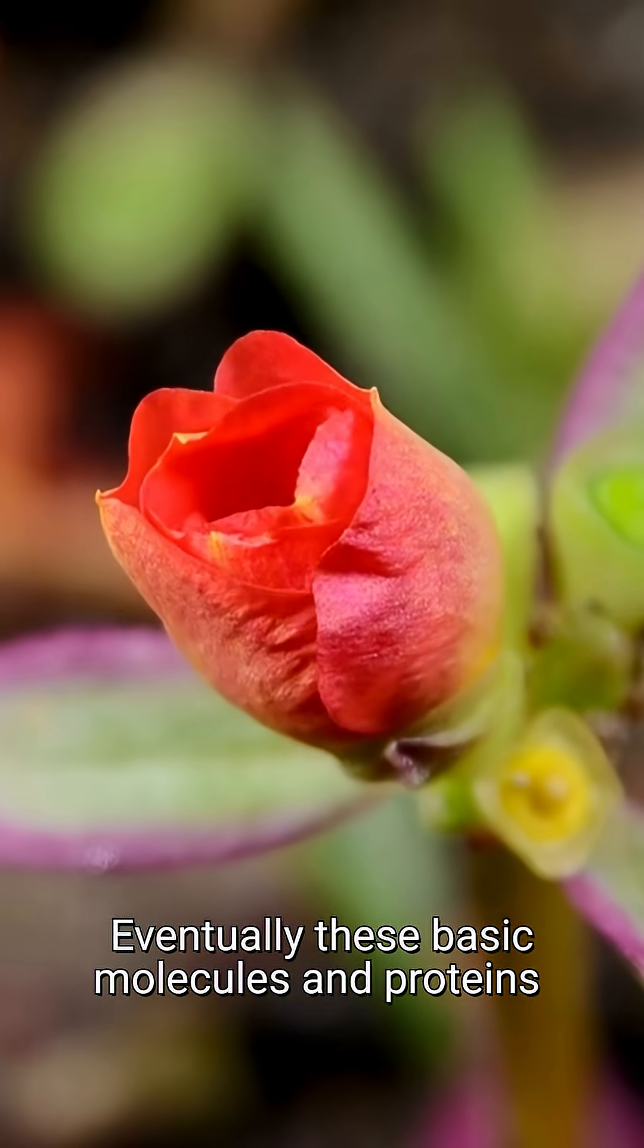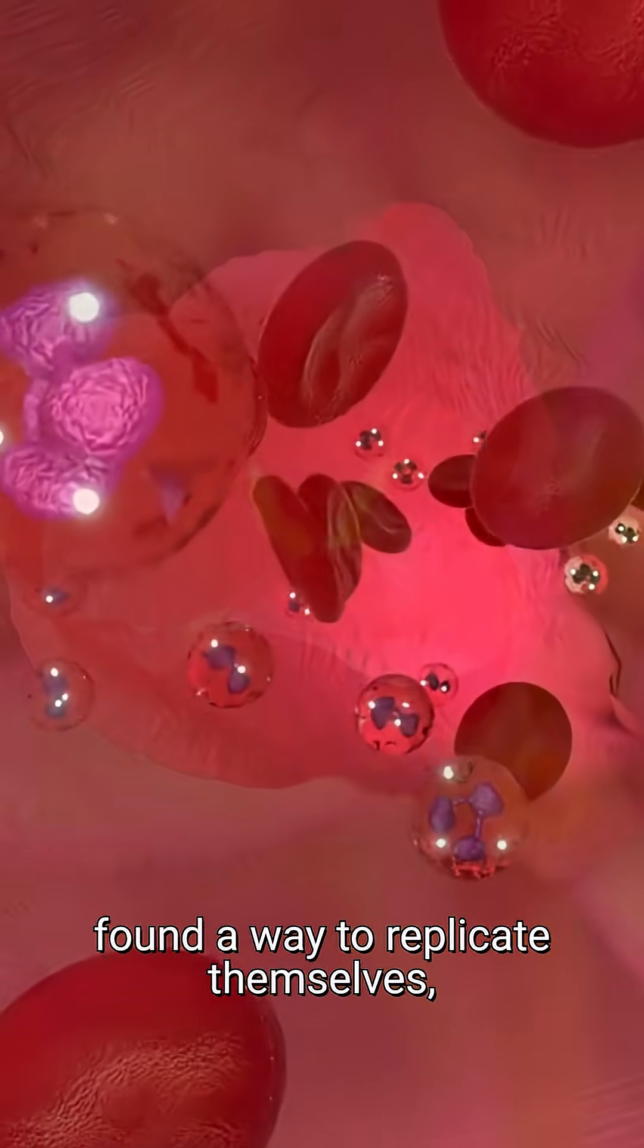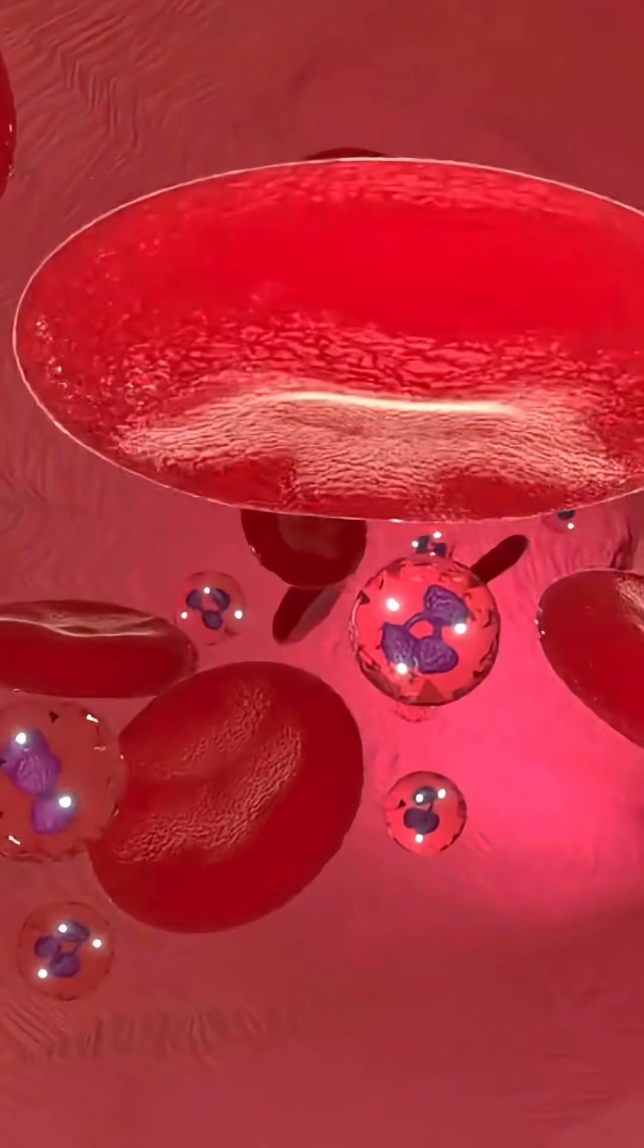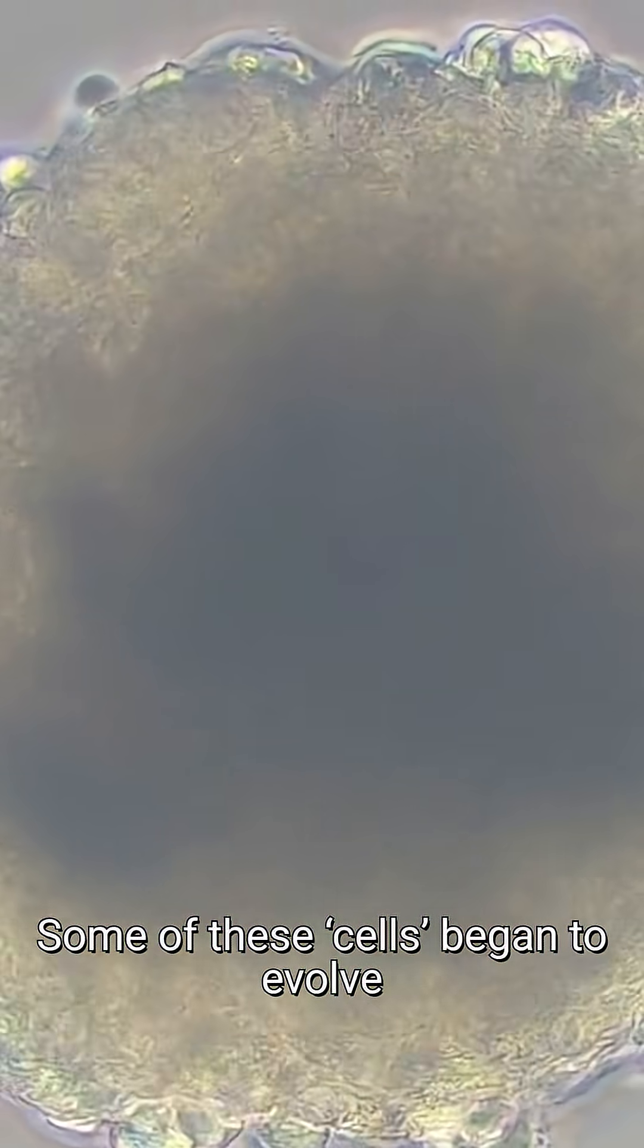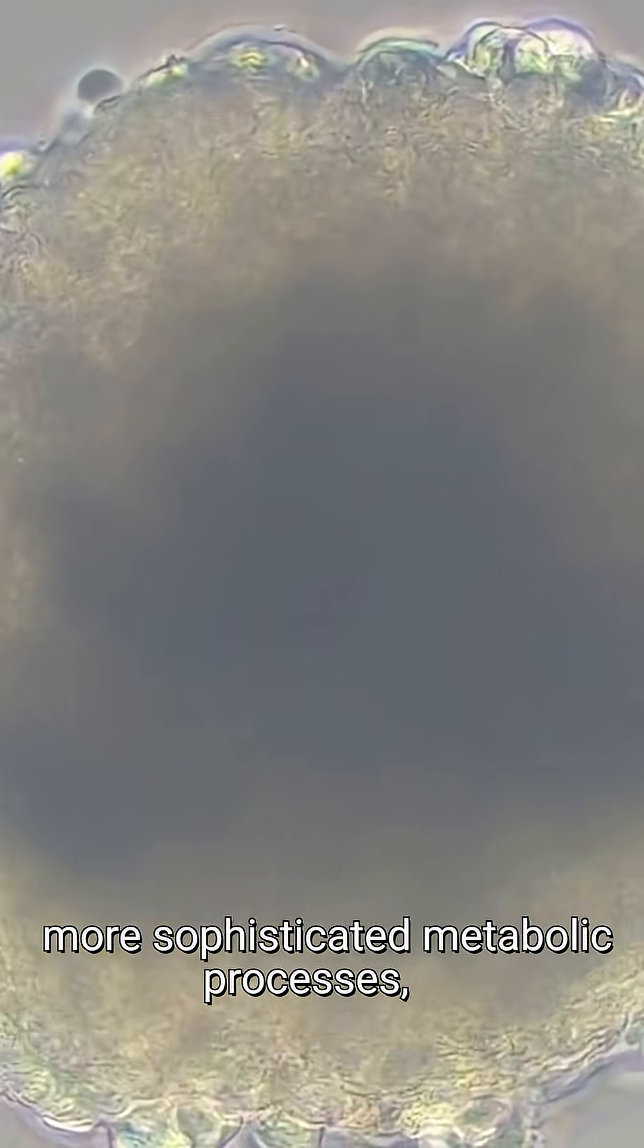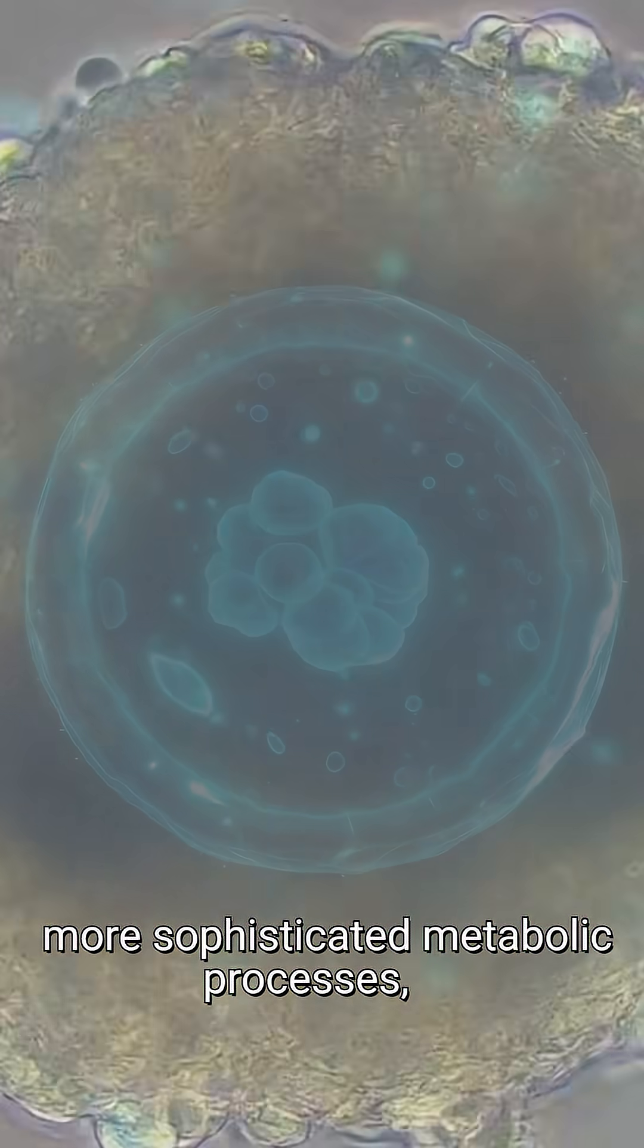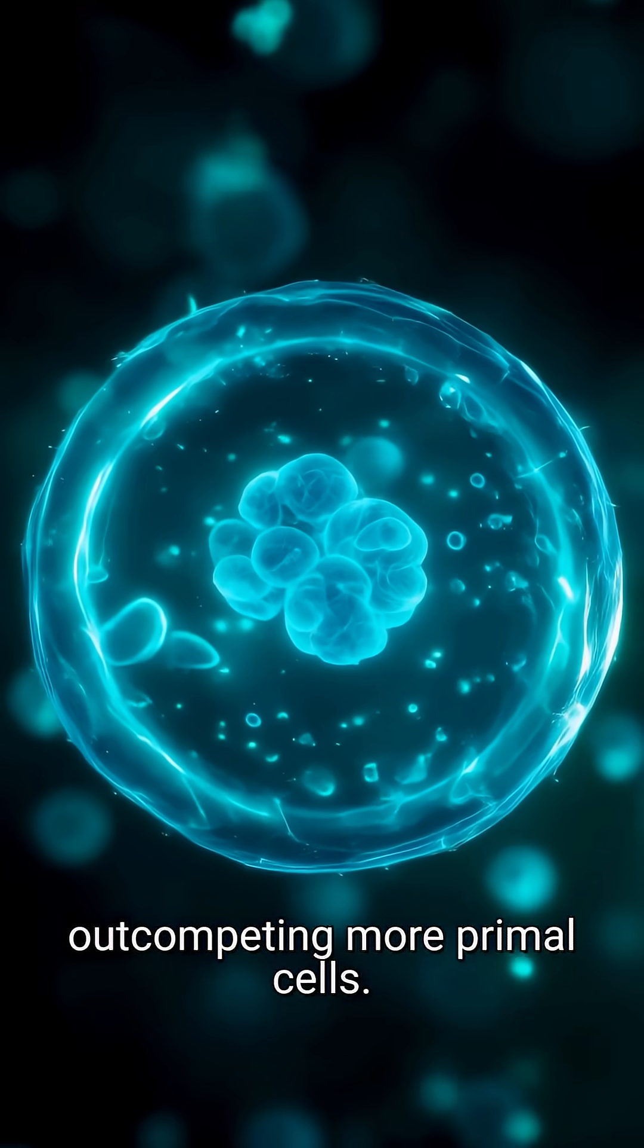Eventually these basic molecules and proteins found a way to replicate themselves, and then each replication became enclosed in its own membrane. Some of these cells began to evolve more sophisticated metabolic processes, out-competing more primal cells.